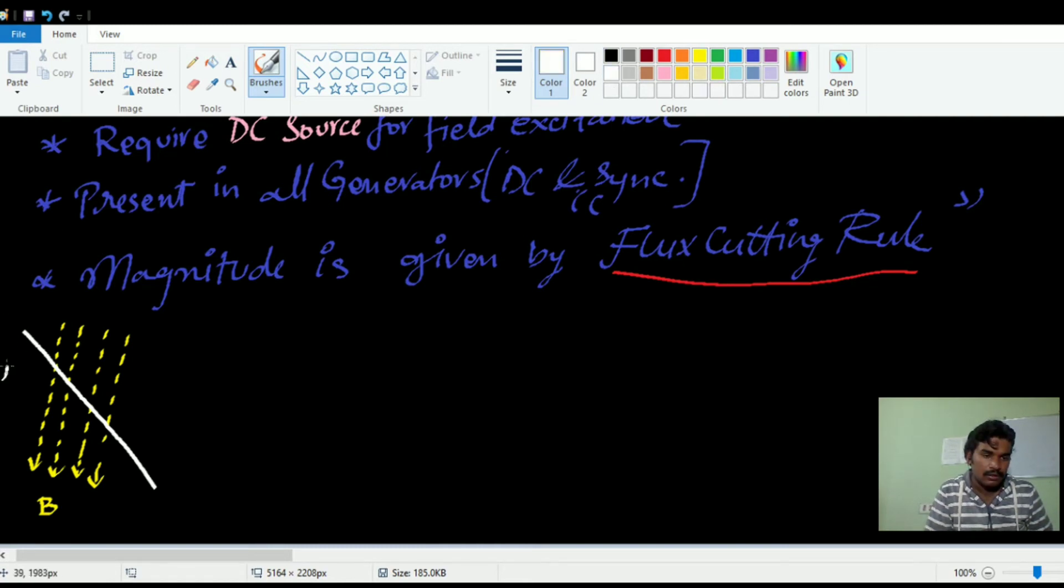L is the length of that conductor. This conductor is rotating or moving with some velocity V. At a certain instant, it is making some angle theta with the magnetic flux.